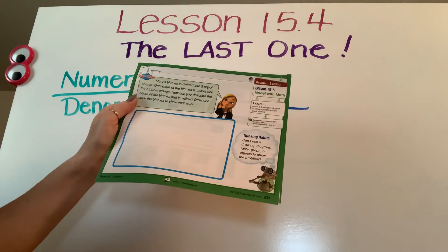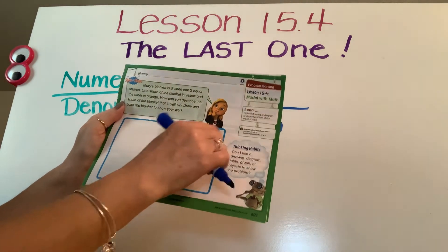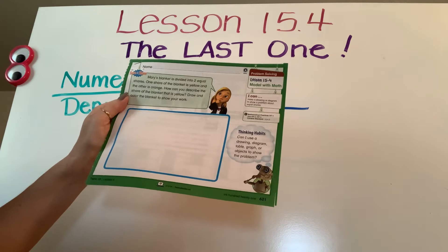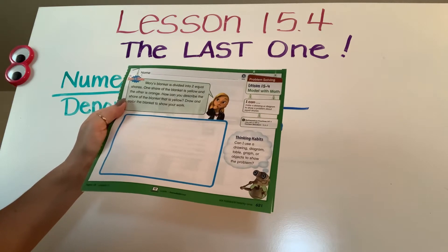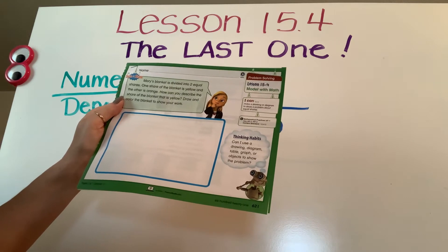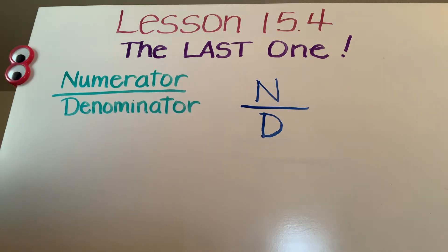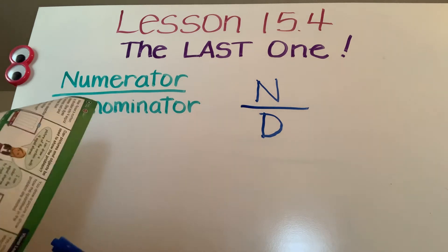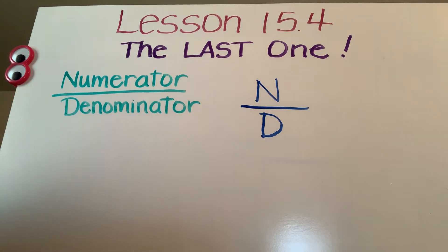All right, first page is easy cheesy. You've got a blanket. I want you to put it into two equal shares and color one share yellow and one share orange. And how would you describe the yellow side? And I would sure like to see a fraction.